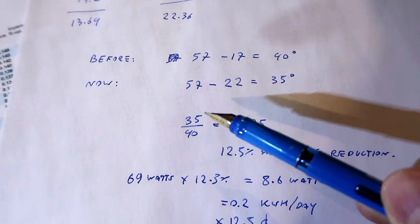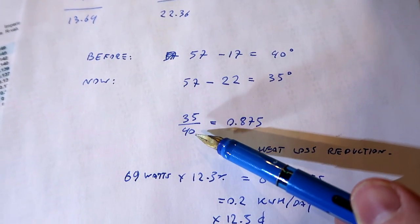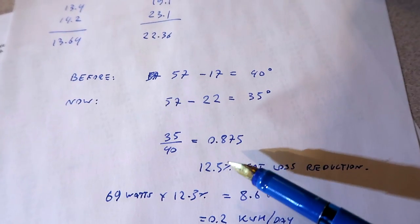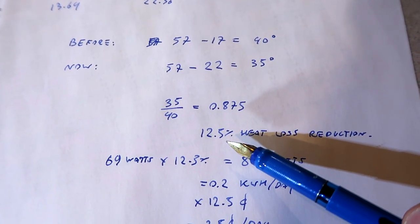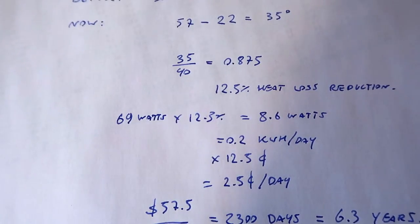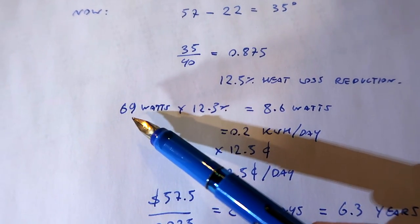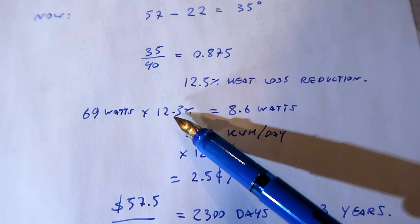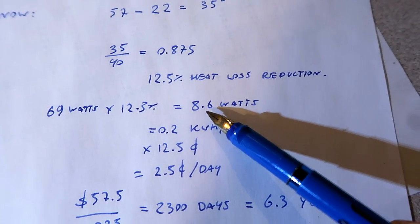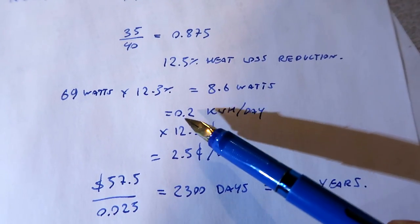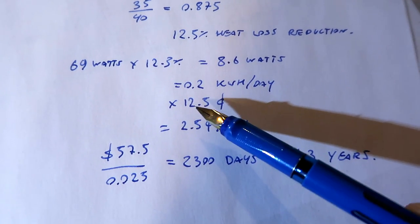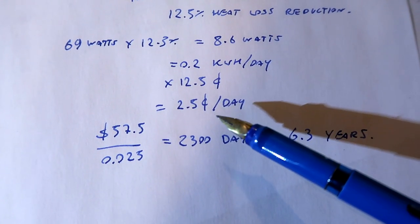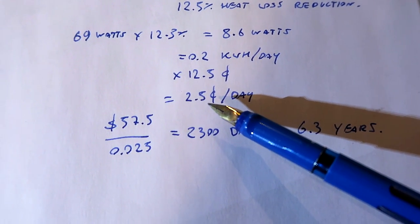That means our heat flow is reduced to this, or about 0.875, which is 12.5% less than what it was before. Let's take our 69 watt calculated heat loss from before, multiply that by 12.5%, and we're saving 8.6 watts. That's about 0.2 kilowatt hours per day, and at 12.5 cents per kilowatt hour comes to 2.5 cents per day.